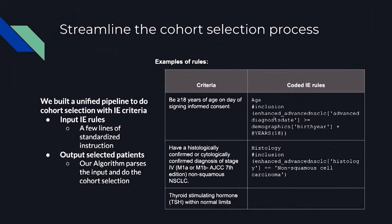Our second step is to streamline the cohort selection process. In general, each clinical trial usually has around 20 rules, always expressed in natural language like 'patients should be older than 18 years.' We streamline the selection process by encoding them as pseudocode, so we are able to more systematically implement different inclusion/exclusion rules.